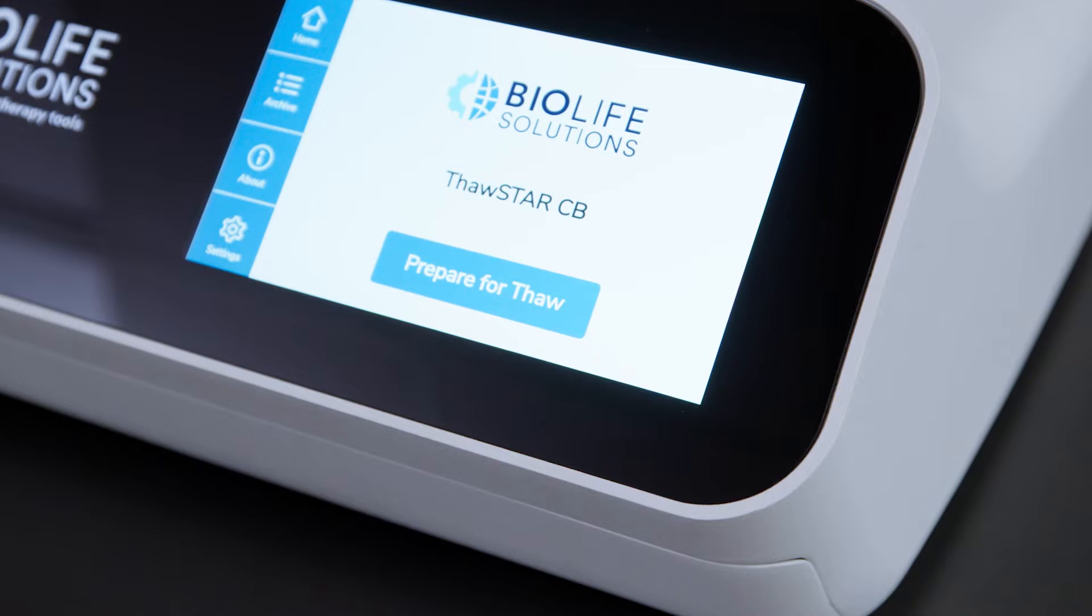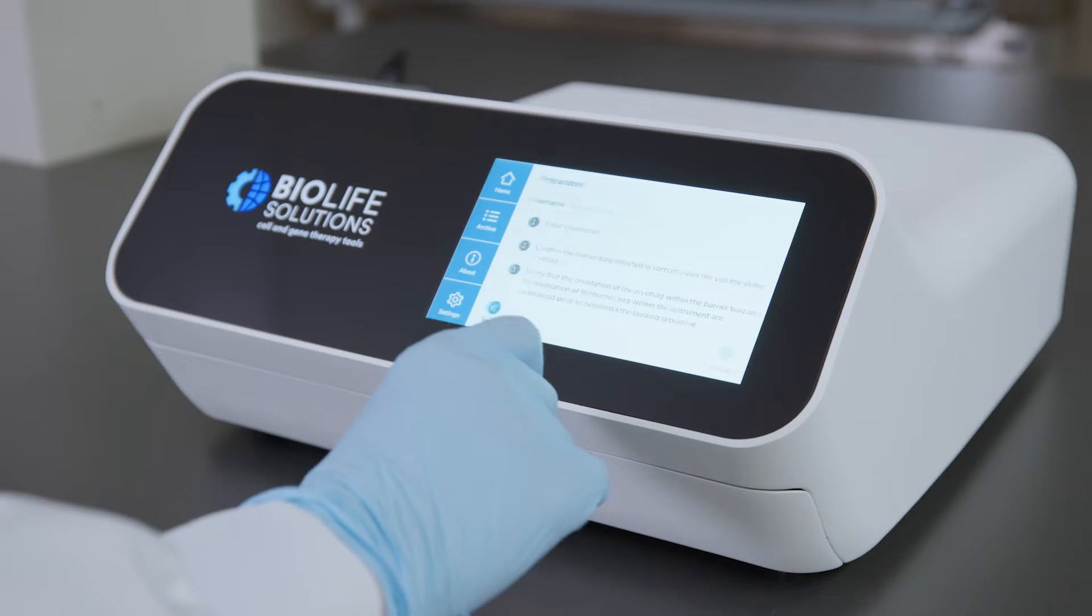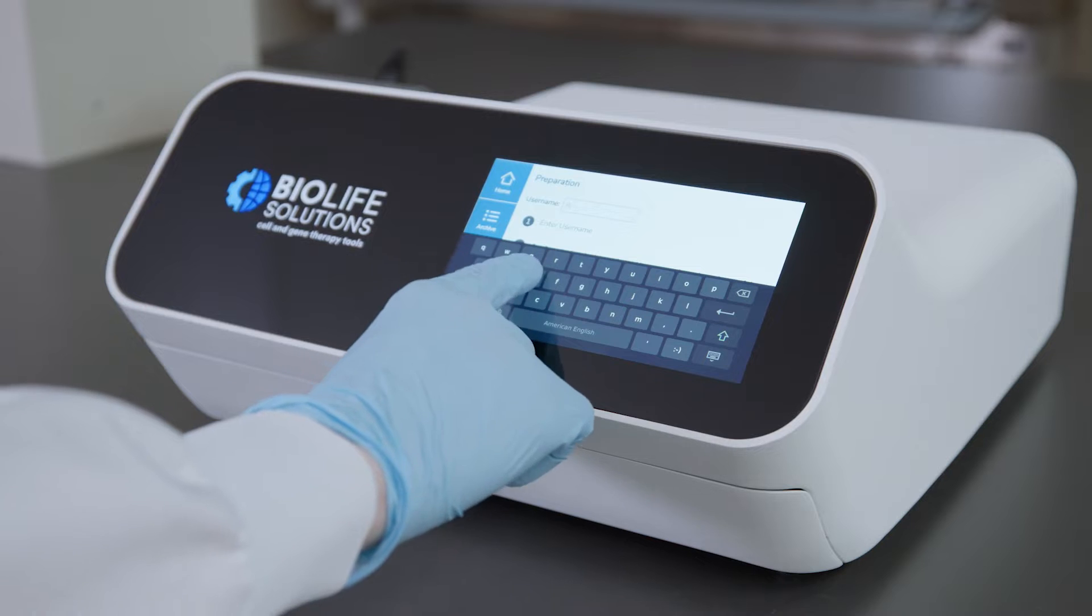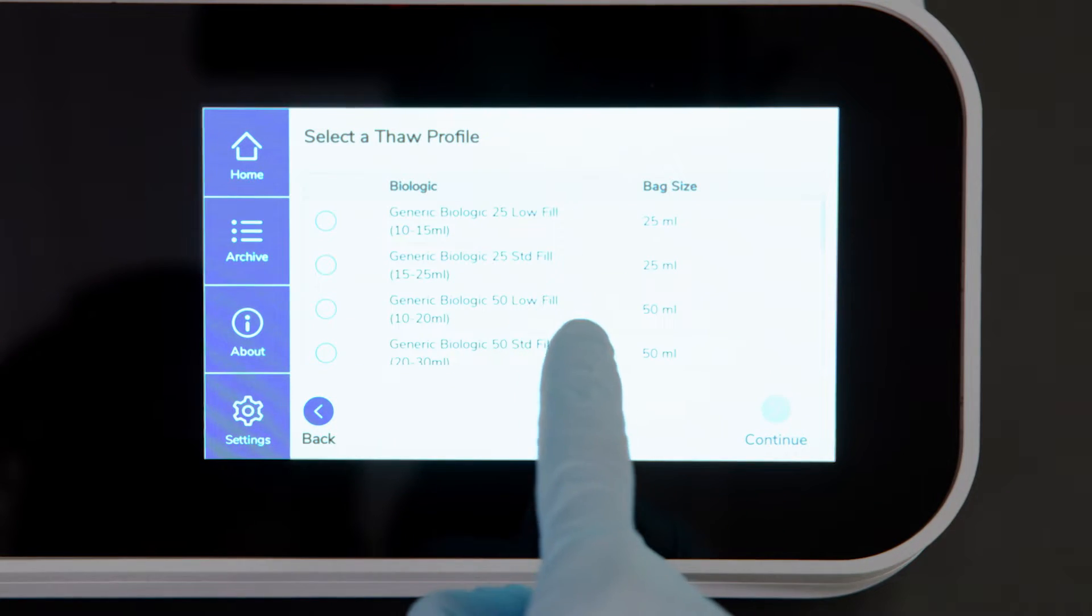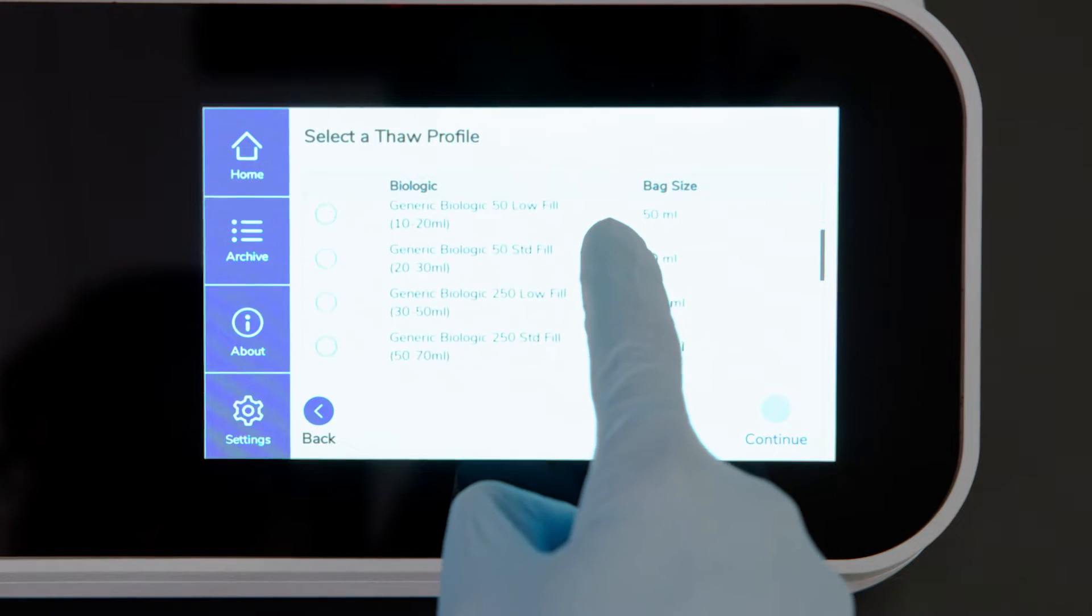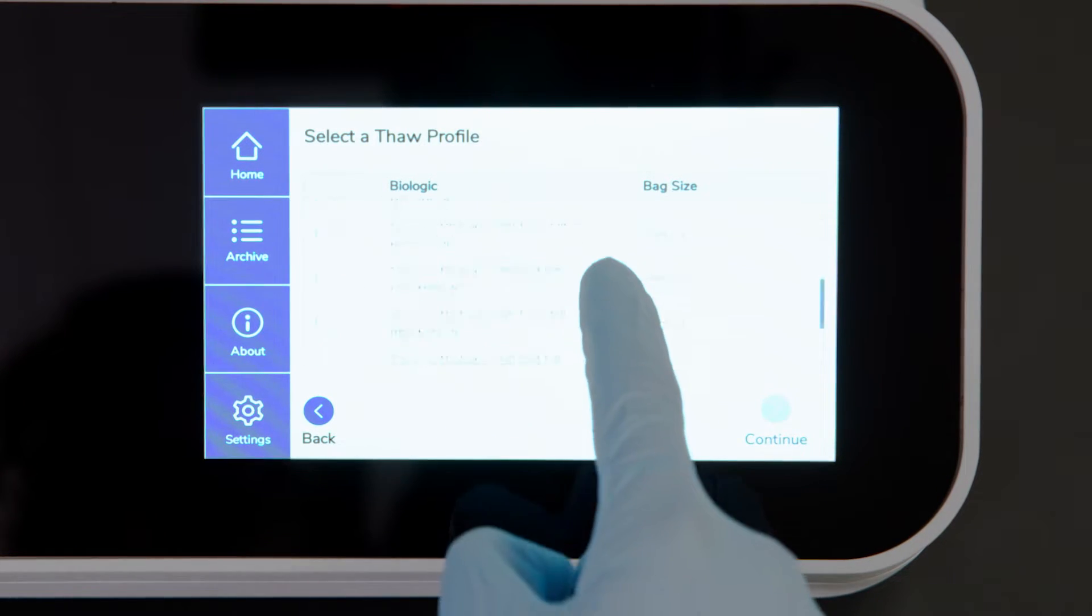When preheating is complete, follow the login sequence and select the size and fill volume of your Leukopax. The Thawstar CB supports thawing for cryobags between 25 and 1000 milliliters. You can choose from several standard thawing algorithms based on popular cryobag sizes.